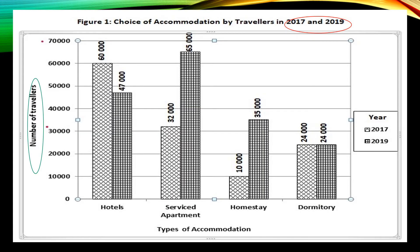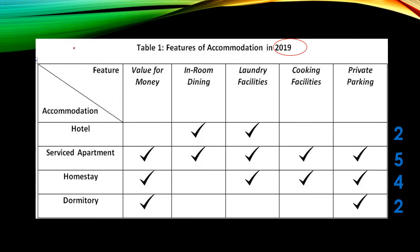This is the question. Look at the features from Table 1 and the number of features. For hotel, you have two. For service apartment, you have five. For homestay, we have four. And lastly, for dormitory, we have two key features. So hotel and dormitory had the same number of key features.